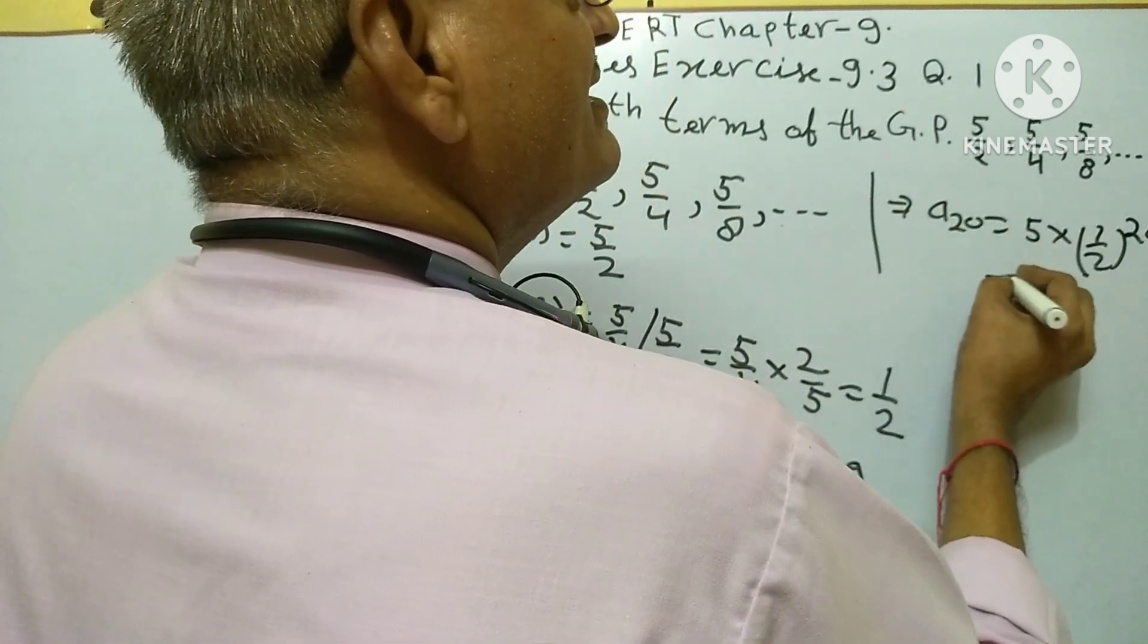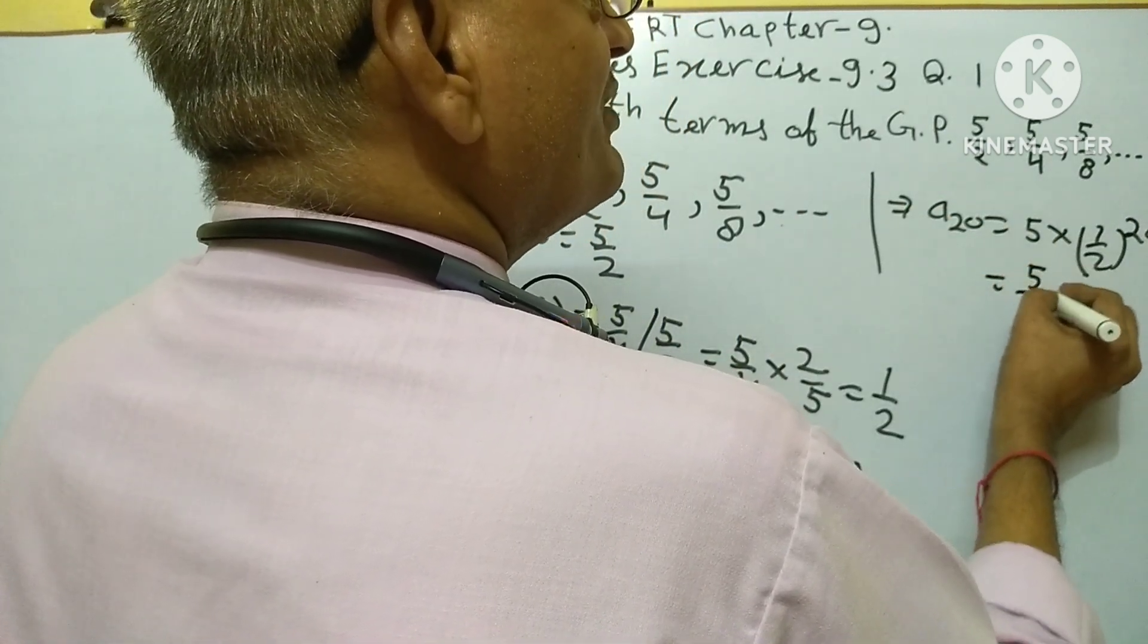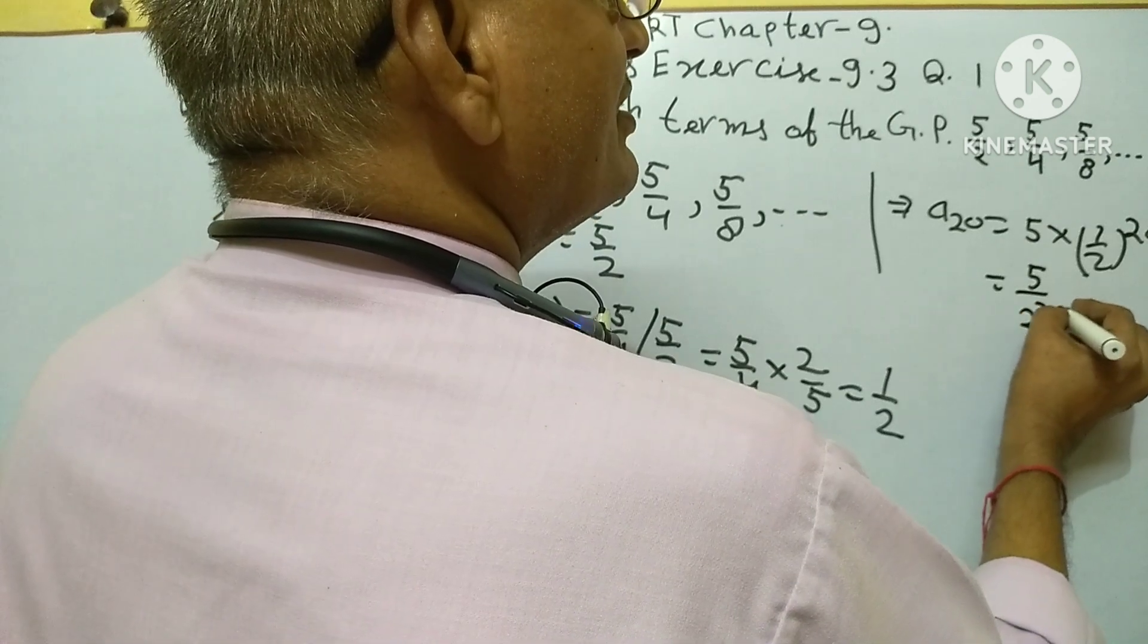Common ratio, a_20 equals 5 upon 2 to the power 20.